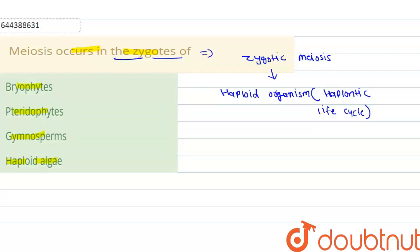So if we talk about the first option, it is saying bryophyte. Bryophyte is having the haplodiplontic life cycle, so first option is incorrect. Secondly, pteridophyte - pteridophyte is also having the haplodiplontic life cycle,